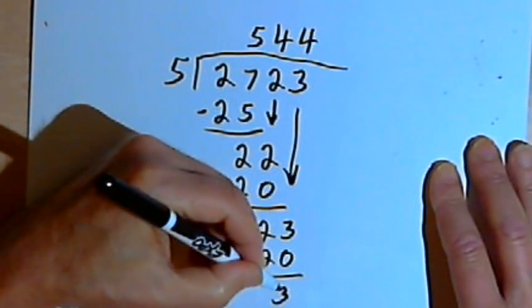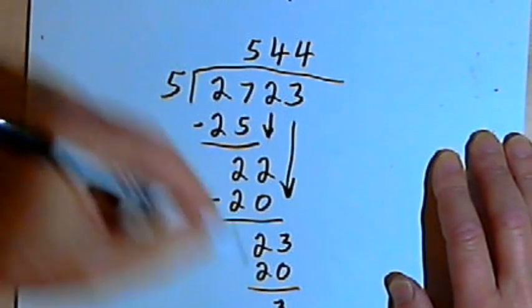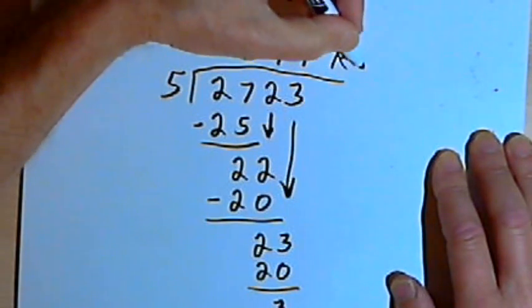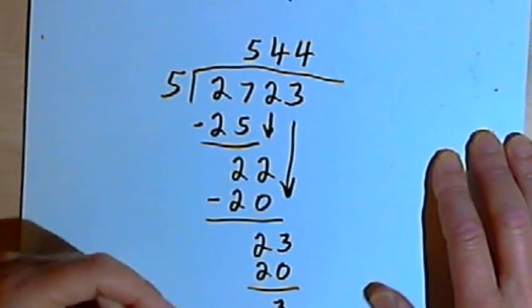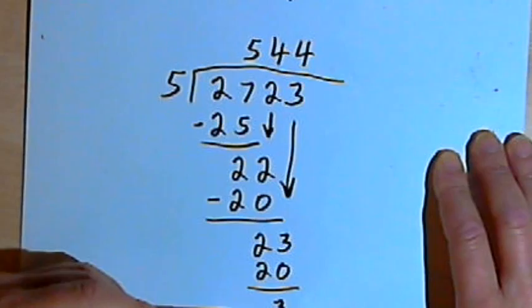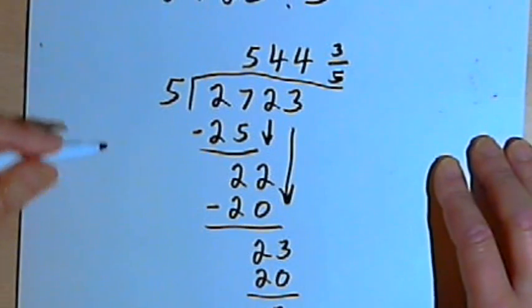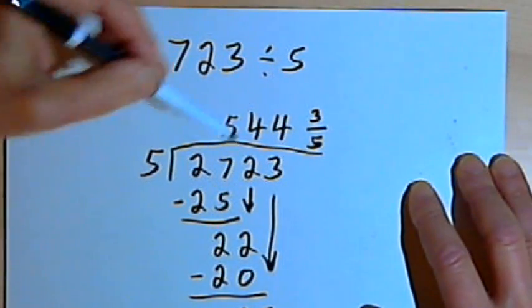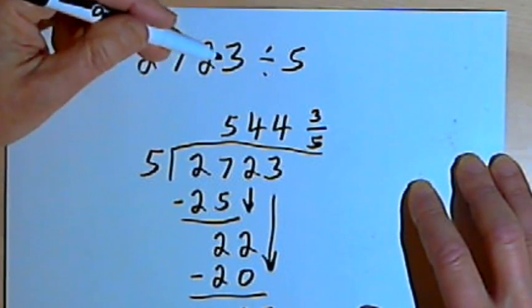And I've got a remainder of... I've got 3 here. And I've got nothing else to bring down. So there's two things you may be told to do. One is you could just after the number we have, the 544, you could write an r for remainder and a 3 after it. Or what you could do is you could realize the next thing you're trying to do is divide 5 into 3, which is like saying 3 divided by 5, or 3 fifths. So we can complete this problem by writing a 3 fifths, 3 over 5, after 544. So the solution is going to be 544 and 3 fifths as a result of dividing 2,723 by 5.